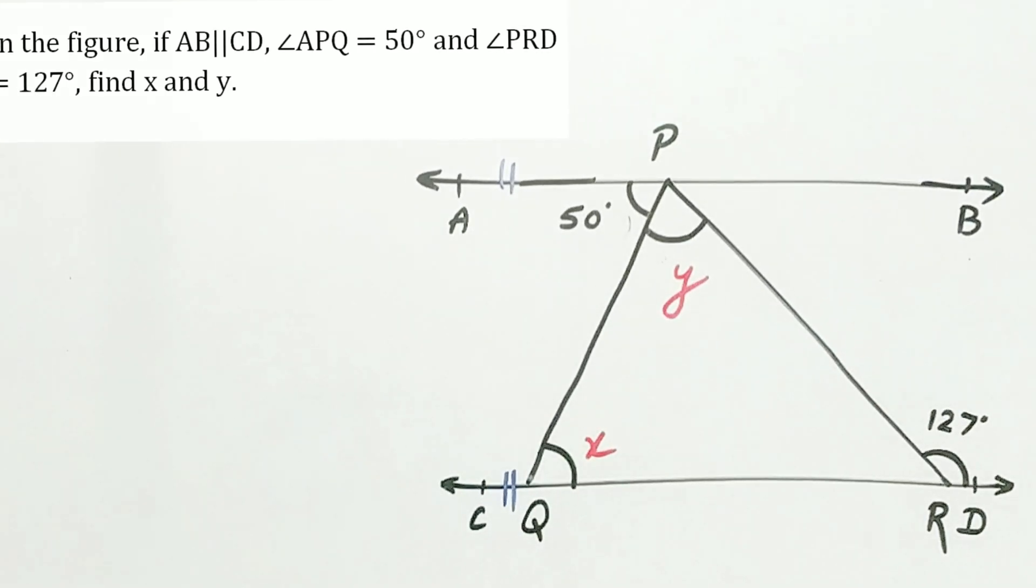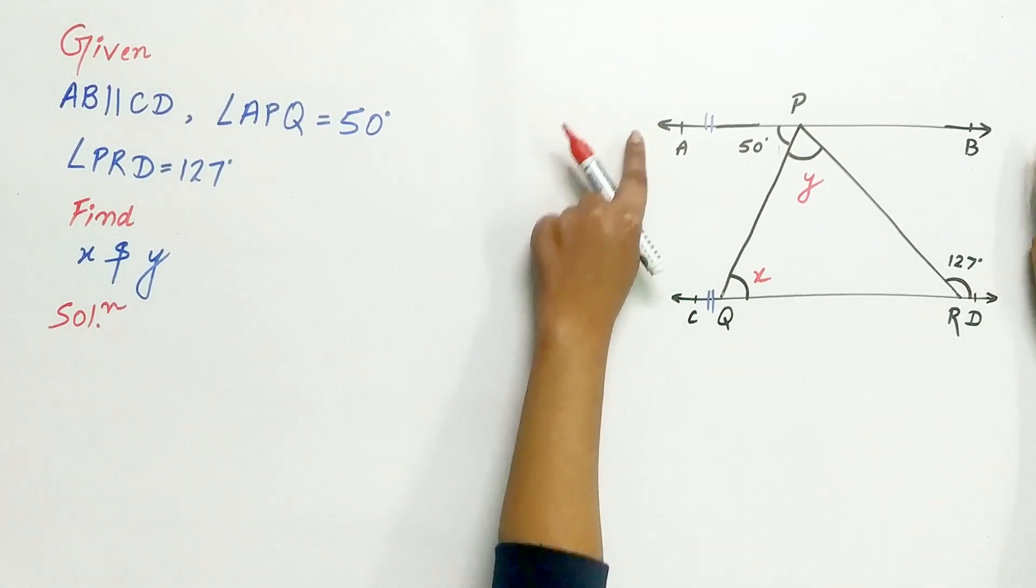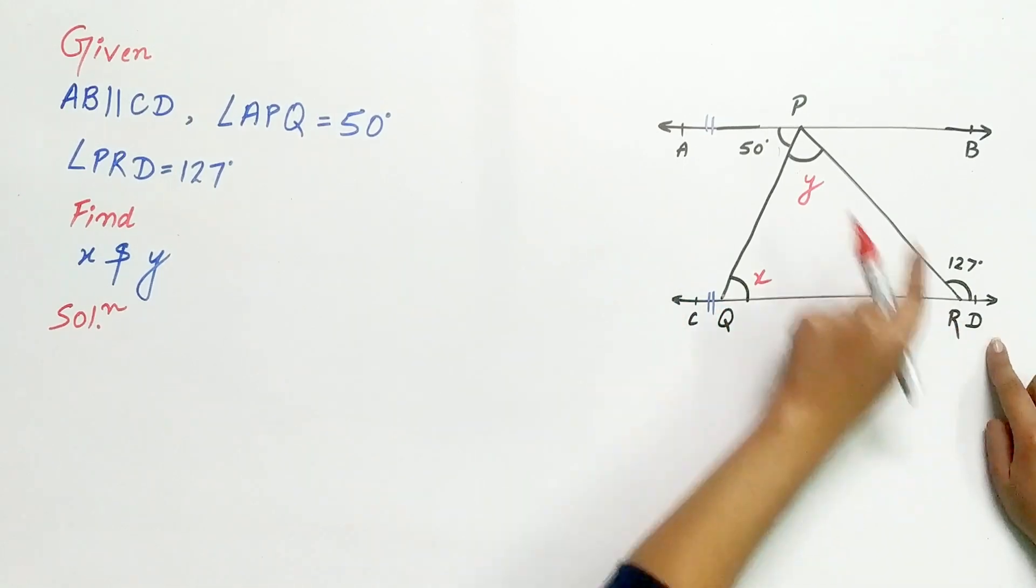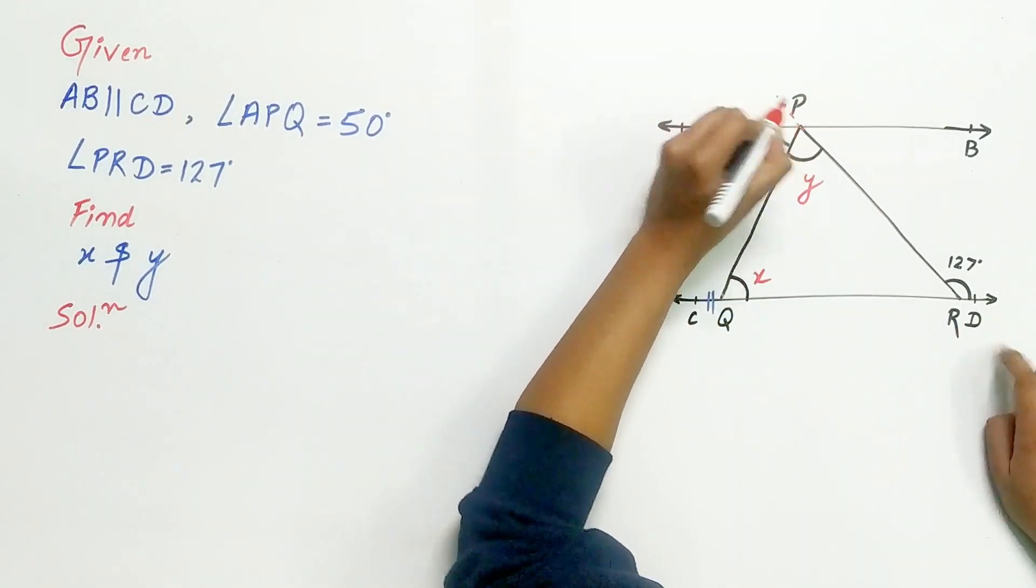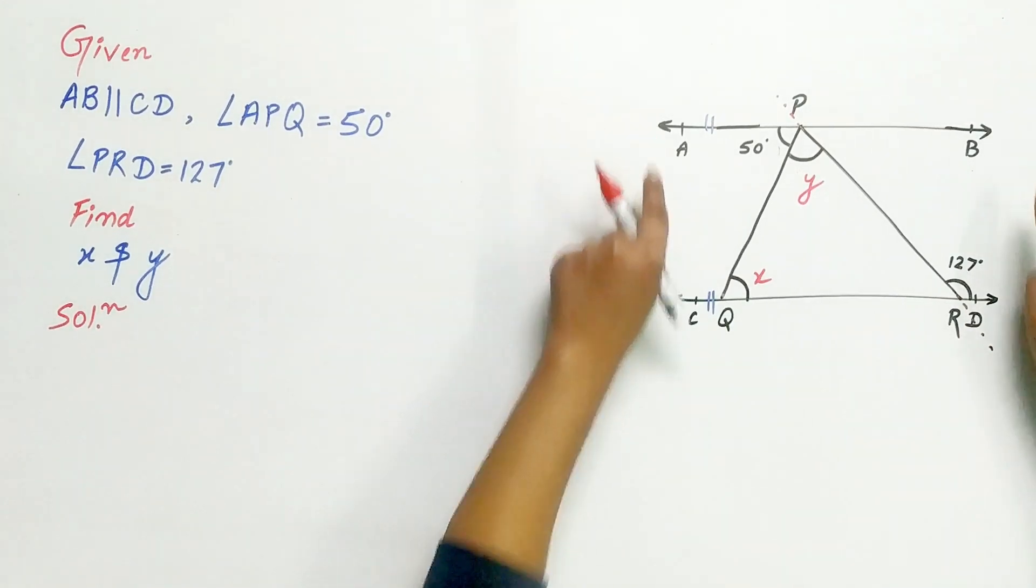So let's do it. Now look carefully. AB and CD are parallel. PR is transversal, that is, it intersects AB and CD.